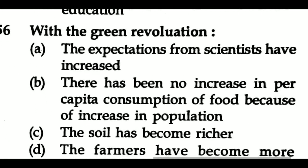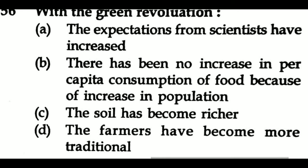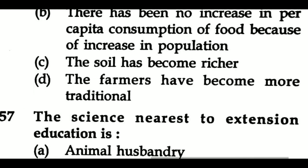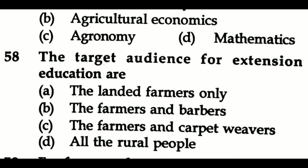Question 56: With the green revolution — Option A: the expectations from scientists have increased, Option B: there has been no increase in per capita consumption of food because of increase in population, Option C: the soil has become richer, Option D: the farmers have become more traditional. Question 57: The science nearest to extension education is — Option A: animal husbandry, Option B: agricultural economics, Option C: agronomy, Option D: mathematics. Question 58: The target audience for extension education are — Option A: the landed farmers only, Option B: the farmers and barbers, Option C: the farmers and carpet weavers, Option D: all the rural people.